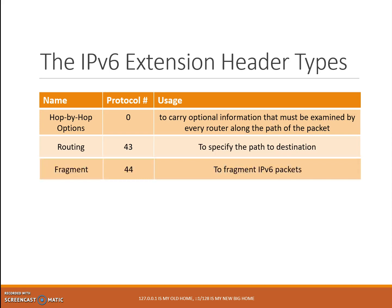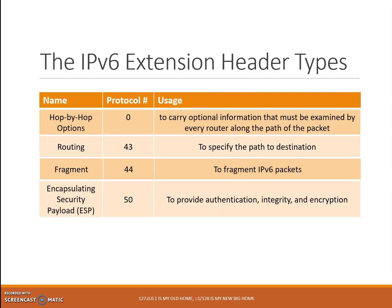Number three: fragment extension header, protocol number 44, used to fragment IPv6 packets. Number four: encapsulating security payload, ESP, protocol number 50. This extension header is used to provide authentication, integrity, and encryption.